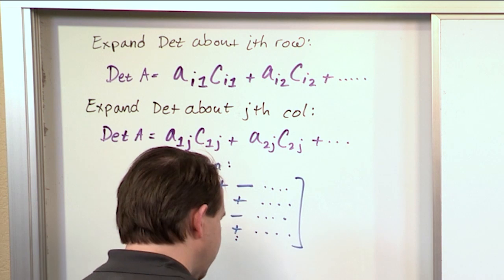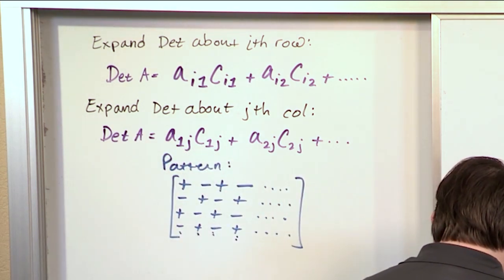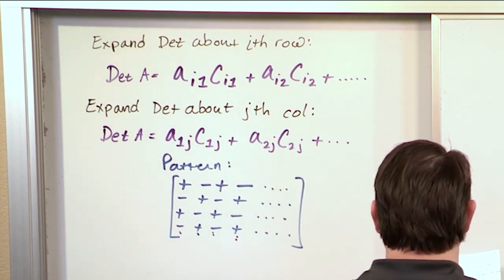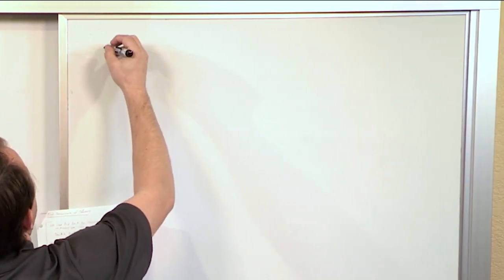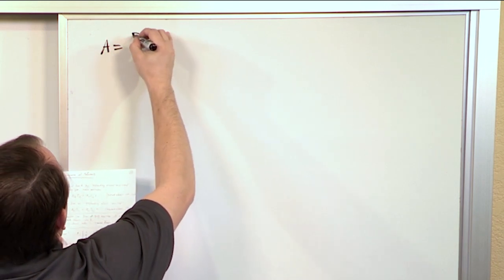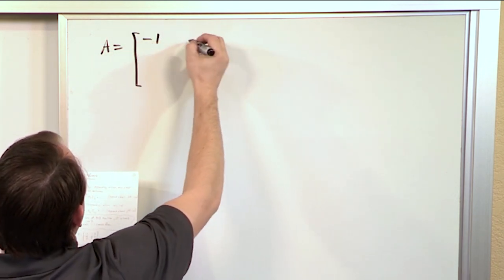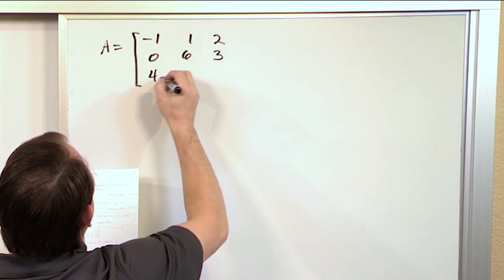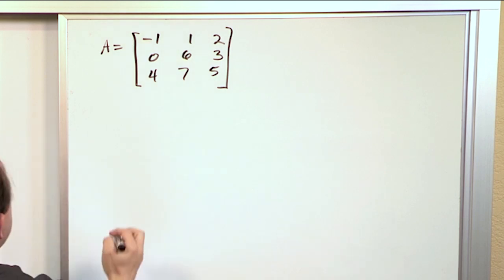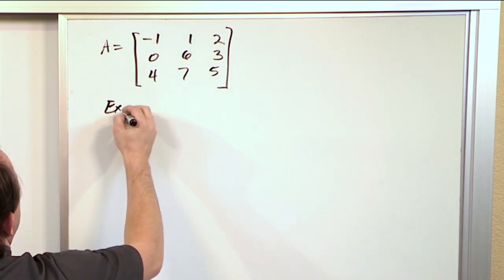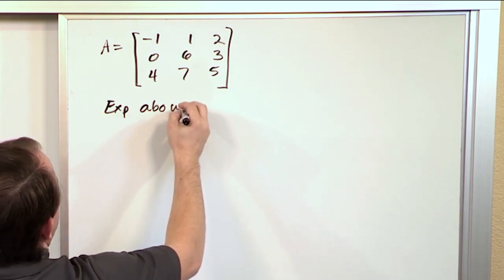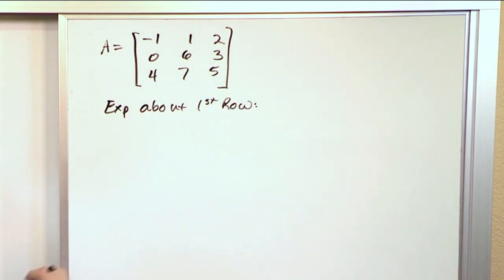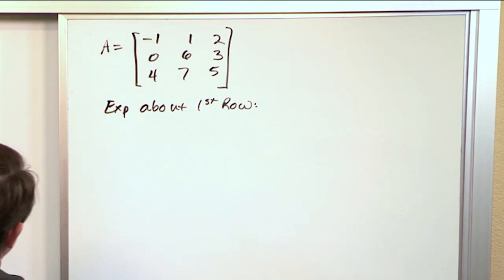So let's flex our muscles and actually do this. Let's put matrix A on the board — this is the one we've been working with for a while: negative one, one, two, zero, six, three, four, seven, five. What we want to do is expand about the first row to get the determinant, and then after that we'll expand through a different row to show you that you get the same answer either way.